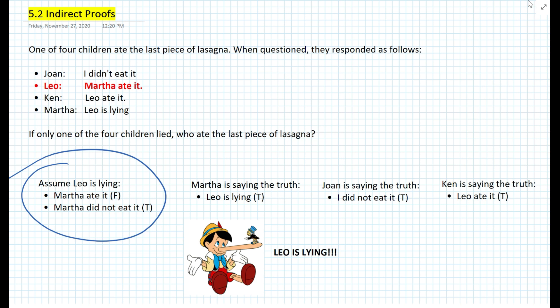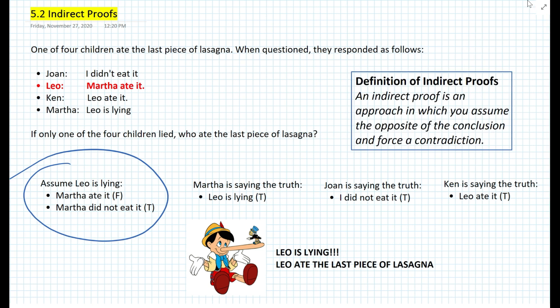So who ate the last piece of lasagna? Martha is saying the truth that Leo is lying. Joan is saying the truth that she didn't eat it. And Ken is saying the truth that Leo ate it. So ultimately, Leo ate the last piece of lasagna. What we just did was an indirect proof — an approach in which you assume the opposite of the conclusion and force a contradiction. We made certain assumptions and were able to force a contradiction. But how can we apply indirect proofs in geometry not involving logic? Let's look at such examples.